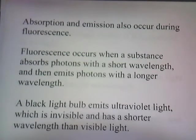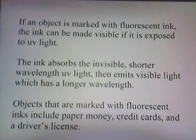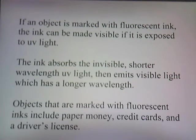Absorption and emission also occur during fluorescence. Fluorescence occurs when a substance absorbs photons with a short wavelength, then emits photons with a longer wavelength. A black light bulb emits ultraviolet light, which is invisible — we can't see it — and has a shorter wavelength than visible light. If an object is marked with fluorescent ink, the ink can be made visible if it's exposed to UV light. The ink absorbs the invisible shorter wavelength of UV light and then emits the visible light which has a longer wavelength. Objects marked with fluorescent inks include paper money, credit cards, and a driver's license.